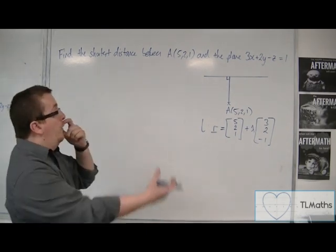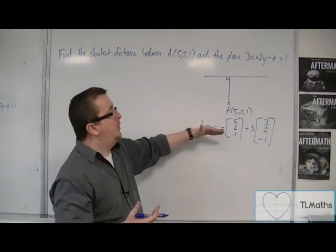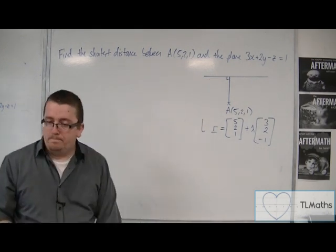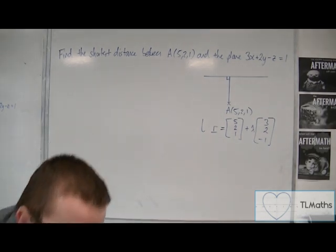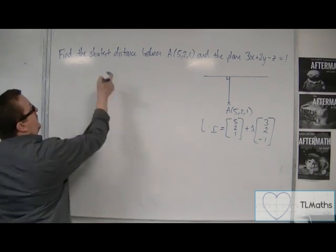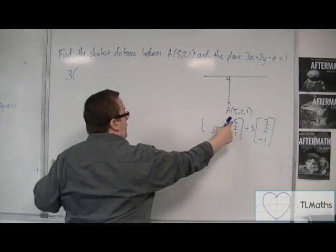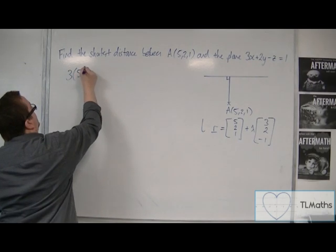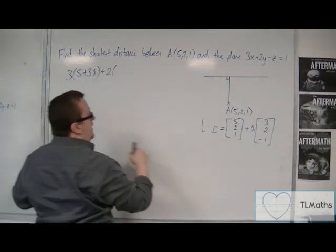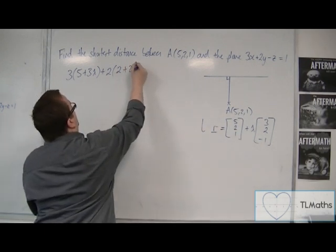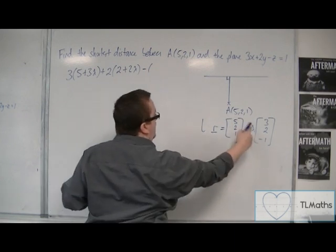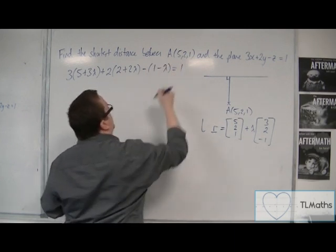I can now work out where the line and the plane intersect — just as we've seen before — by substituting the top, middle, and bottom rows into the equation of the plane. Substituting in, I get: 3(5 + 3λ) + 2(2 + 2λ) − (1 − λ) = 1.